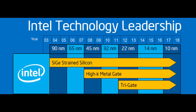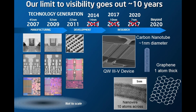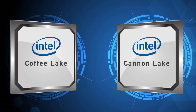Canon Lake was initially expected to be released in 2016, but this got pushed back to 2017. Intel demonstrated a laptop with an unknown Canon Lake CPU at CES 2017 and announced that Canon Lake-based products would be available by the end of 2017. Before Canon Lake's launch, Intel is expected to launch another 14nm process refinement with the codename Coffee Lake.